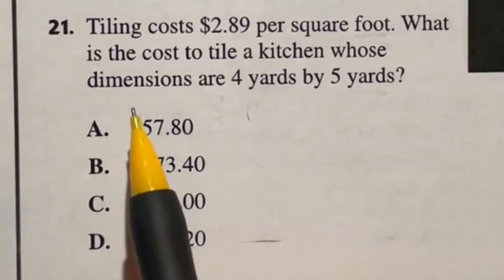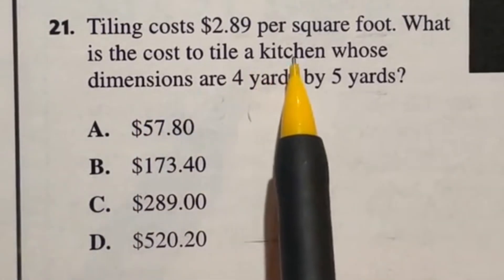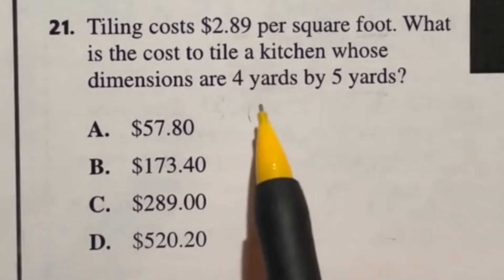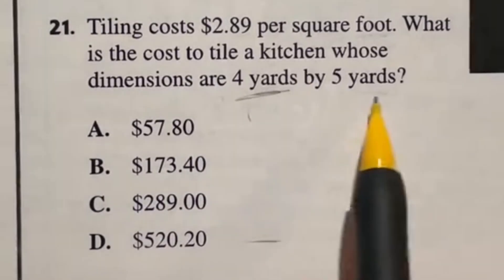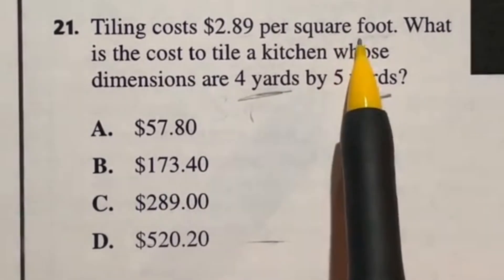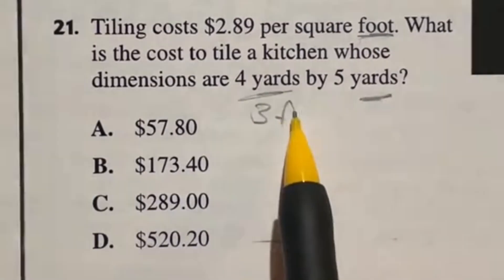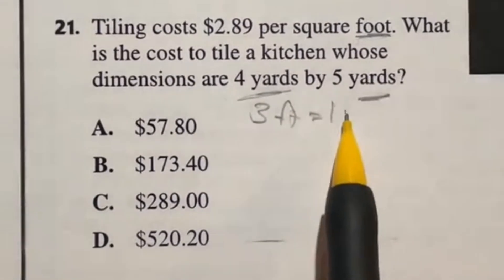Problem 21 says tiling costs $2.89 per square foot. What is the cost to tile a kitchen whose dimensions are four yards by five yards? Big thing to keep in mind here is we have yards here and feet here, so we have to convert. A big thing to know is that there are three feet in one yard.